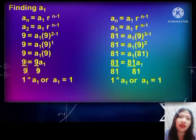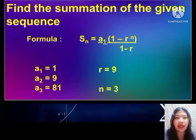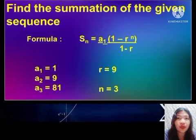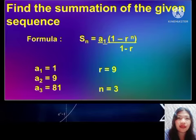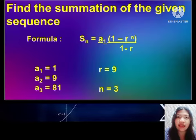To get the summation of the given sequence, we use the formula: s sub n equals a sub 1 times the quantity (1 minus r raised to n) over (1 minus r). We have a sub 1 equals 1, a sub 2 equals 9, and a sub 3 equals 81. The common ratio is 9 and the term position n is 3 because we have 3 terms: a sub 1, a sub 2, and a sub 3.